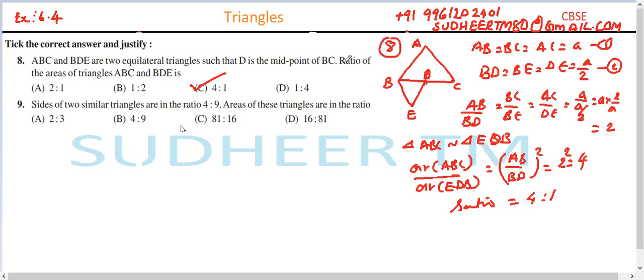Sides of two similar triangles are in the ratio of 4:9. So let the triangles be ABC and PQR. It is given AB/PQ = 4/9, or AB:PQ = 4:9.